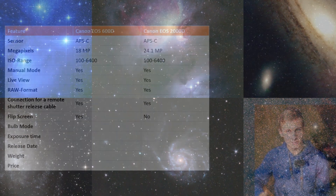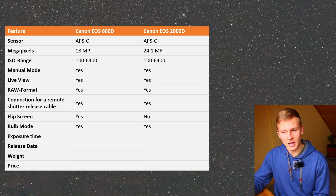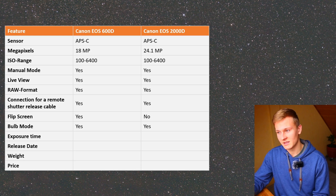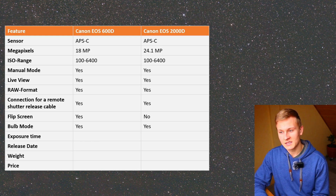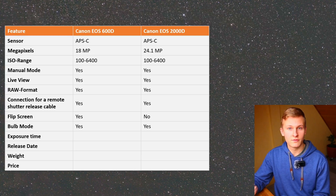The next aspect is bulb mode, which is very important for astrophotography because it allows you to capture longer exposure times than 30 seconds. Without bulb mode the maximum exposure time is 30 seconds, but in deep sky astrophotography we usually want to capture long exposures up to five minutes.